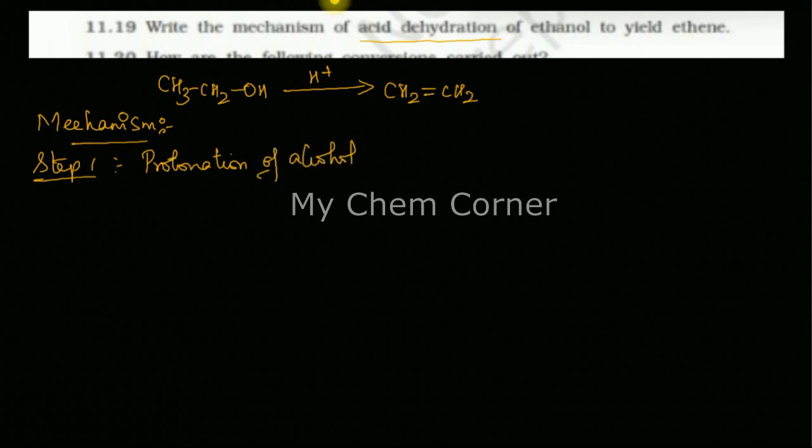Now what do we mean by protonation of alcohol? The alcoholic group is going to accept a proton. So I'm going to take here CH3CH2OH which is my reactant.